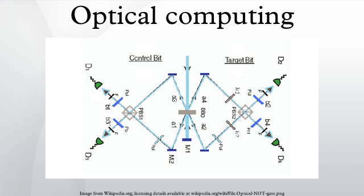Optical or photonic computing uses photons produced by lasers or diodes for computation. For decades, photons have promised to allow a higher bandwidth than the electrons used in conventional computers. Most research projects focus on replacing current computer components with optical equivalents, resulting in an optical digital computer system processing binary data. This approach appears to offer the best short-term prospects for commercial optical computing, since optical components could be integrated into traditional computers to produce an optical-electronic hybrid.